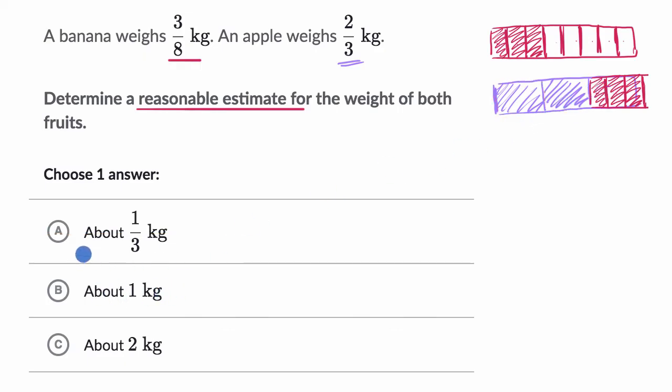When we take the two-thirds and add to that three-eighths, it looks like, and once again, we're estimating, we don't know exactly, it looks like we're a little bit over a kilogram. So I like this choice. And we're nowhere close to two kilograms. Two kilograms would be filling in another whole on top of this one right over here. So it's not that choice either.